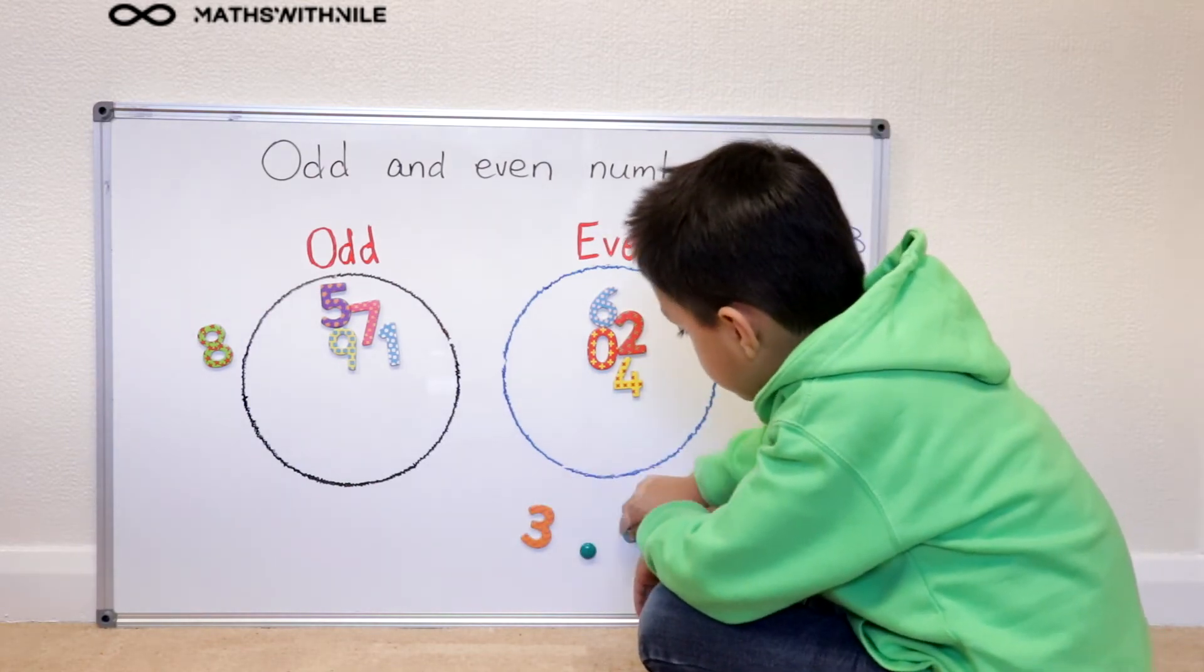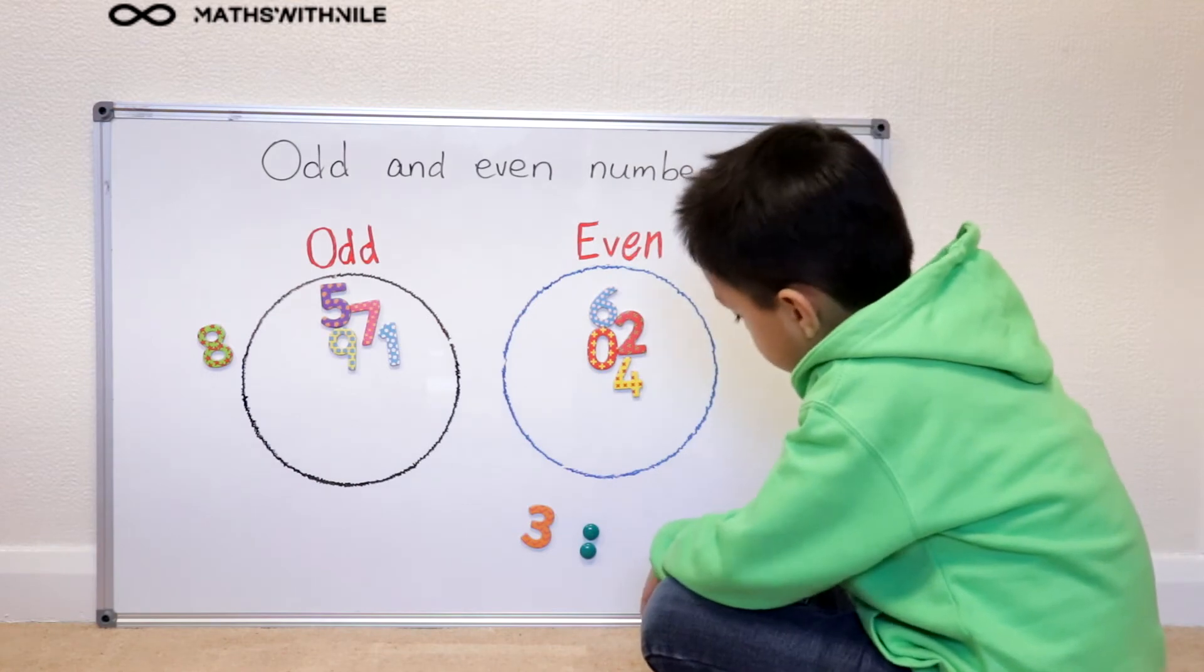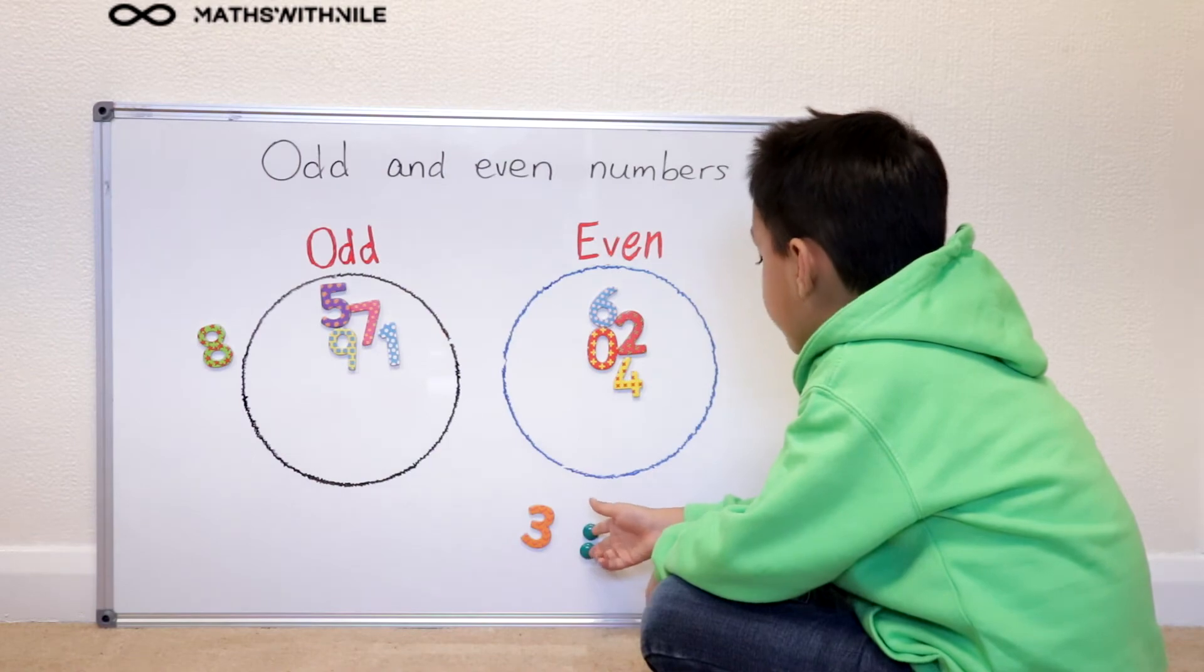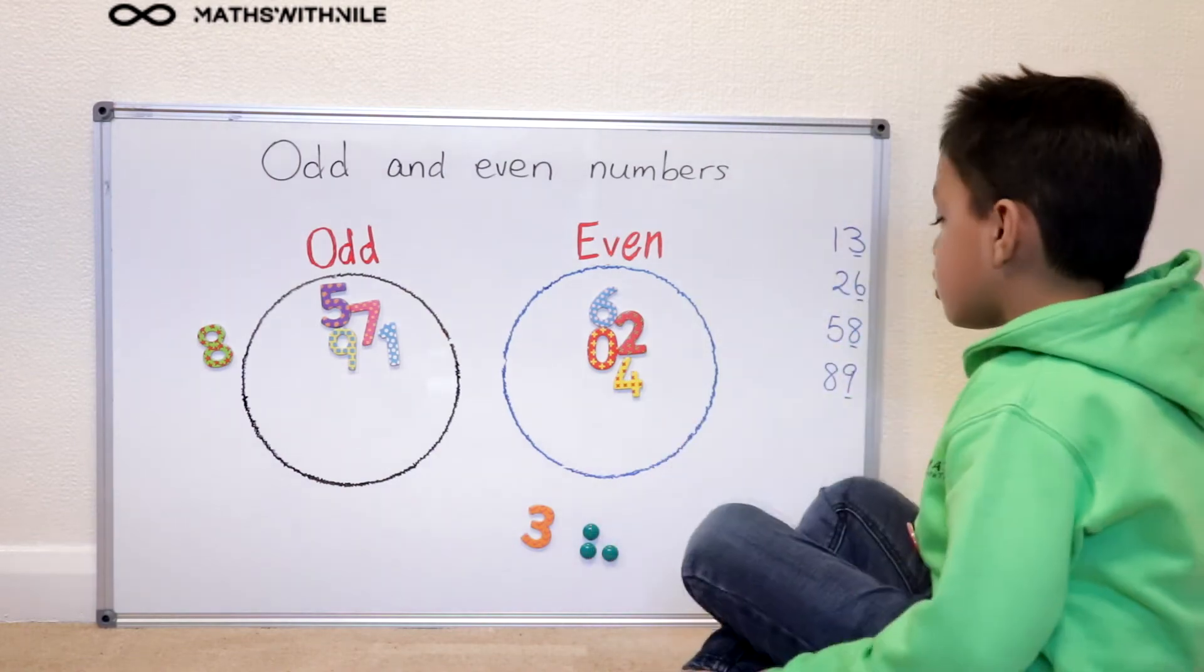And then I am going to choose three. One, two, three. And then we got one group of two and one left over.